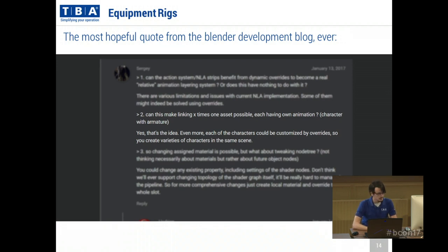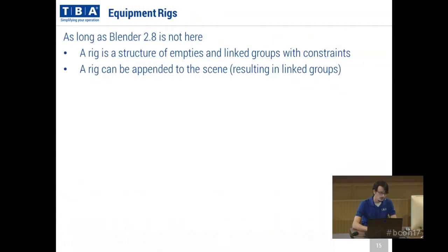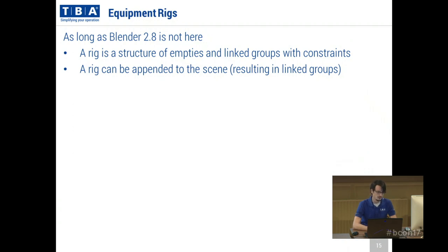There's a quote from the Blender development blog that made me very happy, because for years I've been hoping for the possibility of just linking in a rig and using multiple instances of that rig — and in the future that is actually going to be possible. But as long as Blender 2.8 isn't feasible for production work, we use rigs which are a structure of empties and dupli groups with constraints, and we append that to the scene.